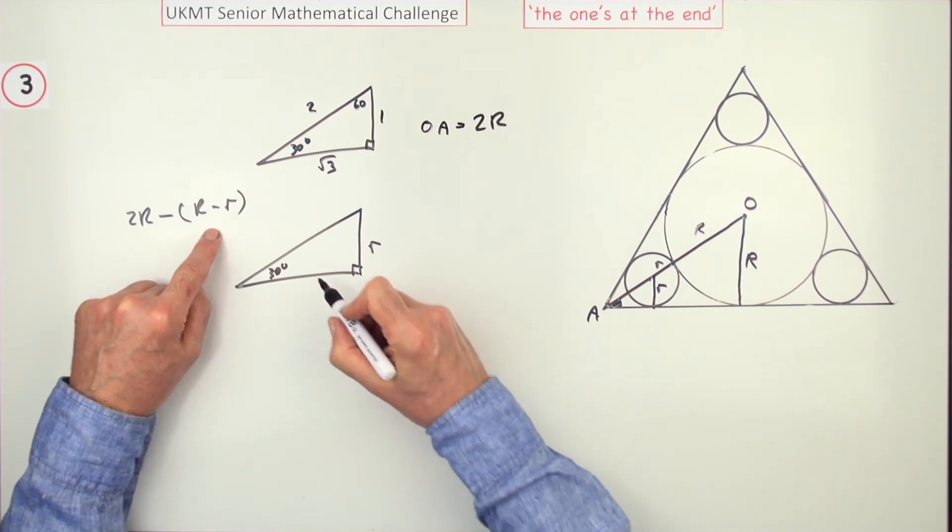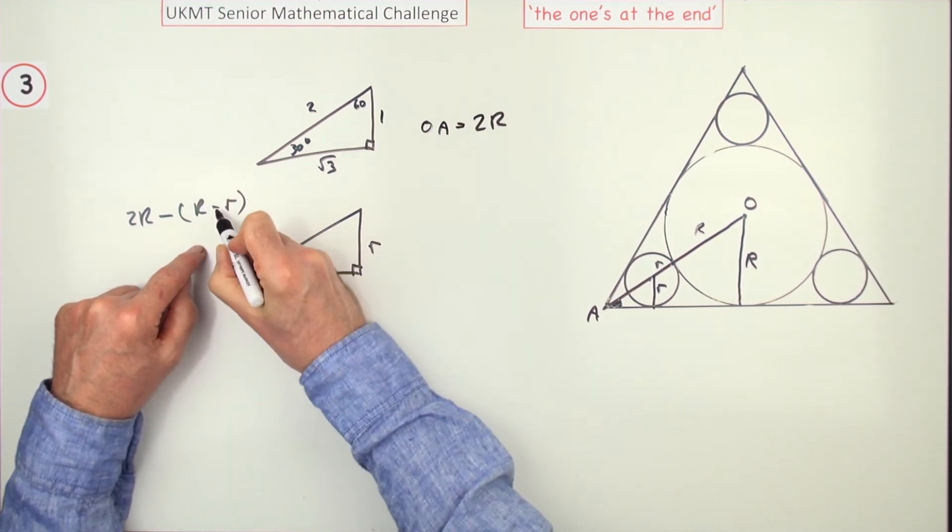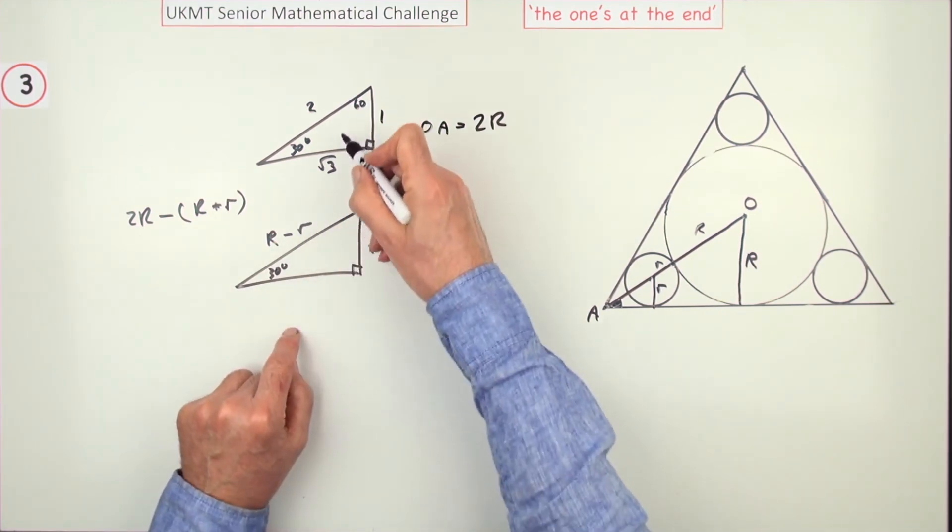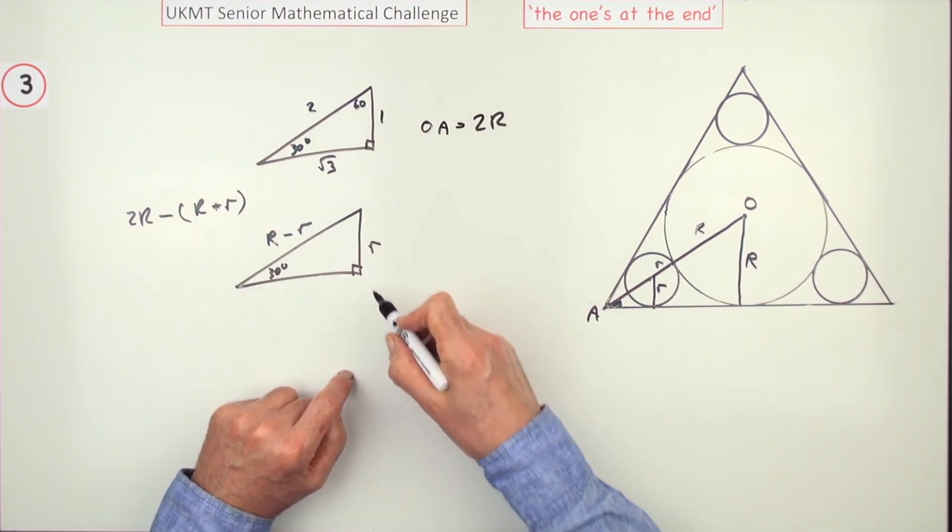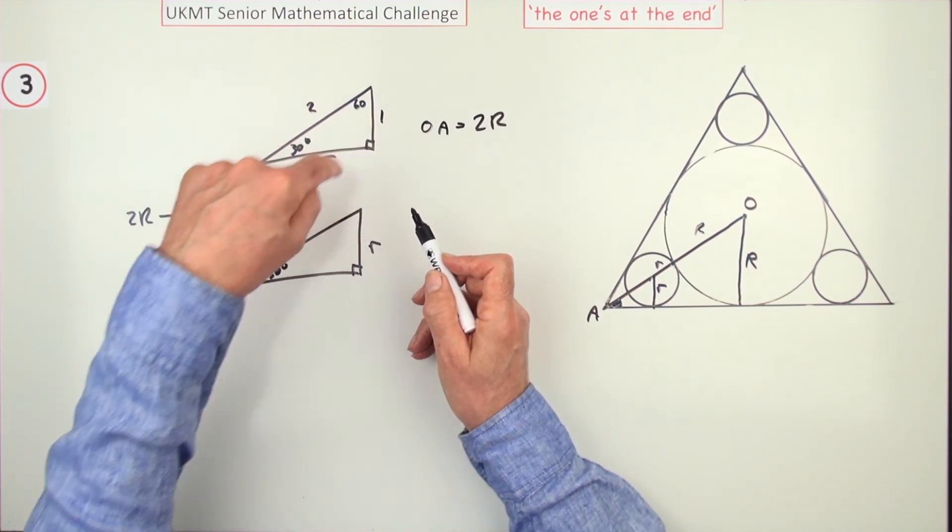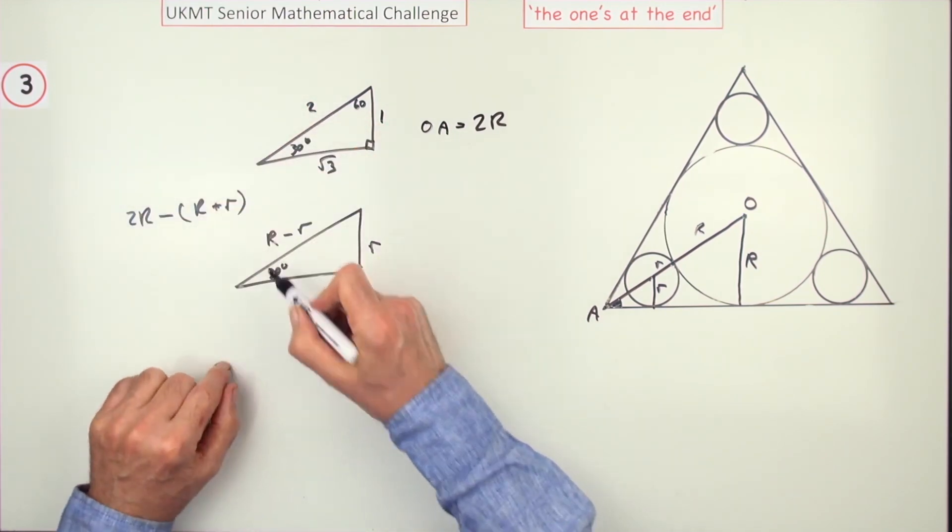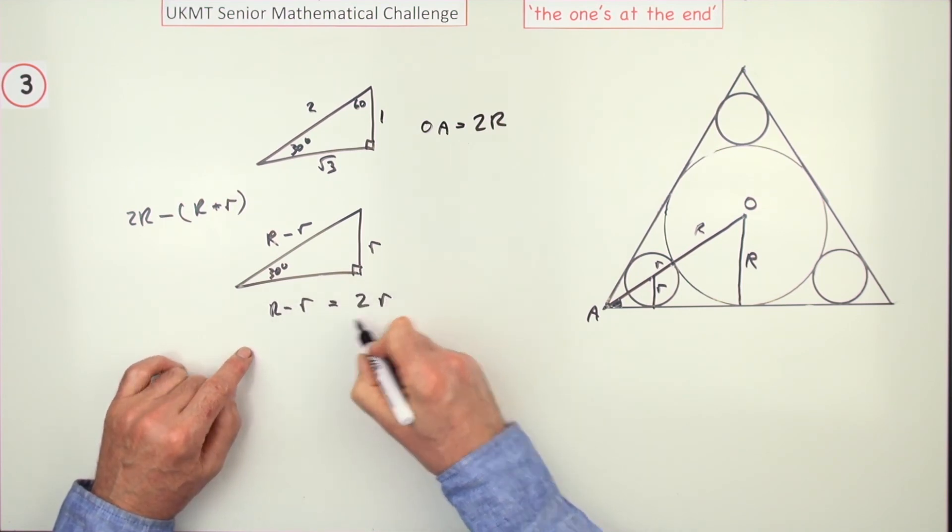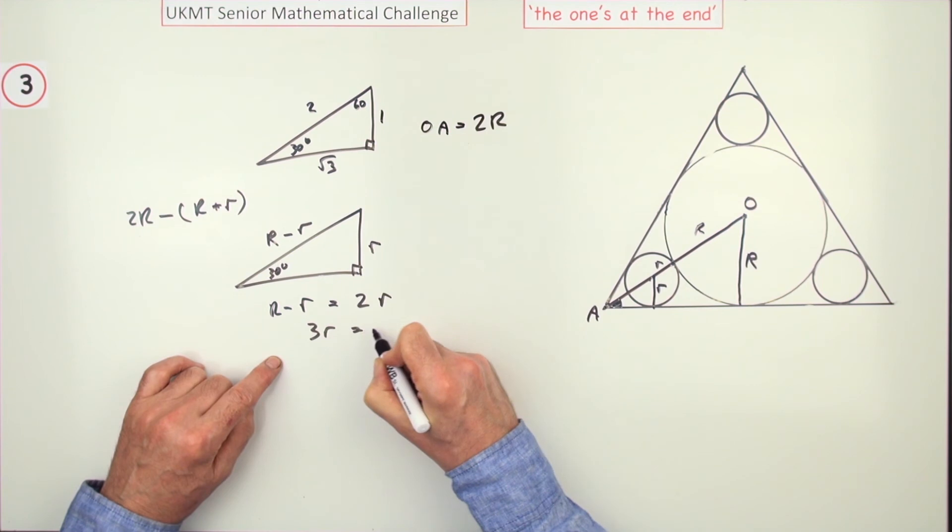So that leaves you with r, and I meant to say plus, of course, there, minus r. Now, just compare that with this. Similar triangles, but it's simpler in this case because it's just twice. The ratio of the sides here are 2 to 1. So that means that r minus small r must be 2 times small r. There you go. 3 times r equals r.